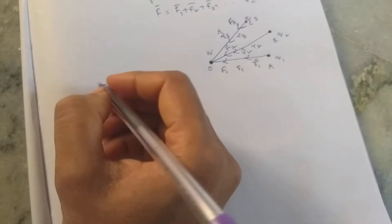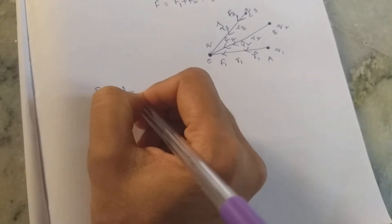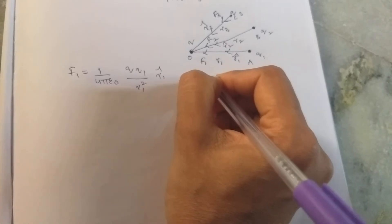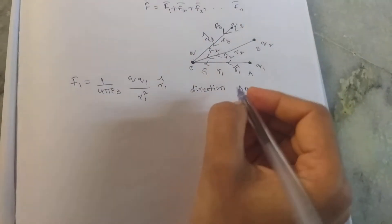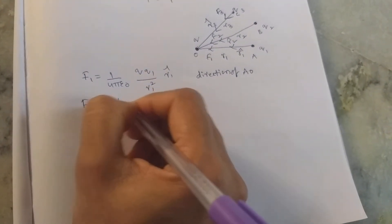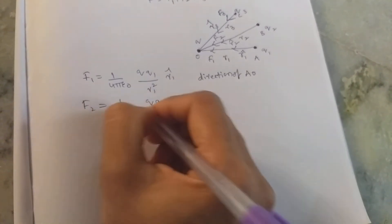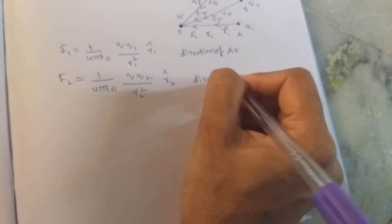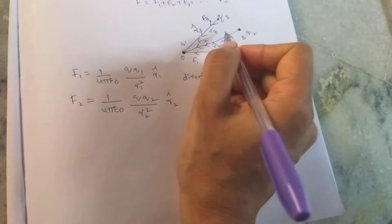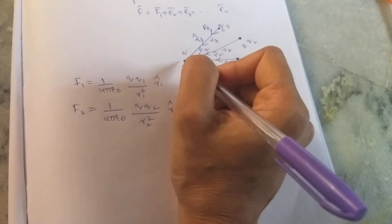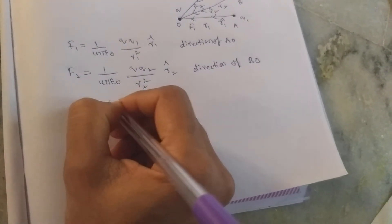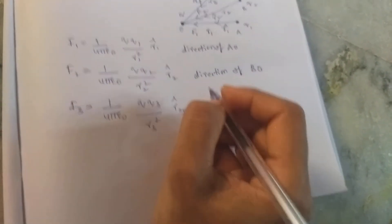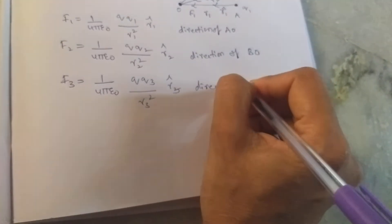Using Coulomb's law, we can find F1 = (1/4πε₀) × (Q·Q1 / R1²) × R1 cap, in the direction of AO. The second force F2 = (1/4πε₀) × (Q·Q2 / R2²) × R2 cap, in the direction of BO. And F3 = (1/4πε₀) × (Q·Q3 / R3²) × R3 cap, in the direction of CO.